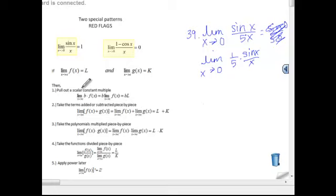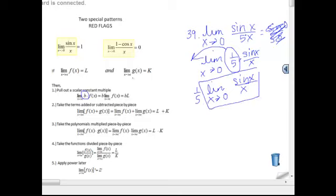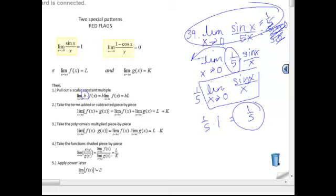Here, this is where I'm going to go ahead and use some of these properties, and it states that if you have a scalar multiple, this was property number 1, I can take that scalar multiple and bring it out and just evaluate this. So I'm going to take 1 fifth times the limit as x approaches 0 of sine of x over x. So this is nice because this is a red flag right here. It is all equal to 1, so I have 1 fifth times 1. This thing is equal to 1 fifth.